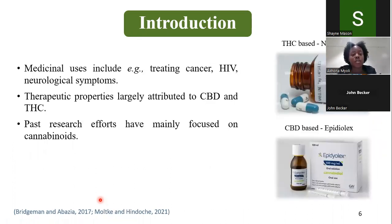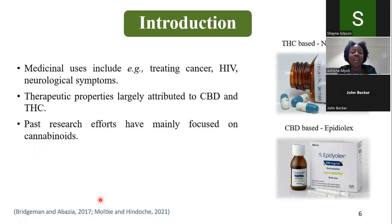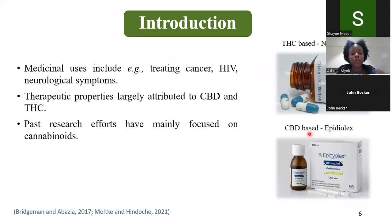With regards to its medicinal uses, cannabis is known to alleviate symptoms in individuals suffering from cancer or HIV, and to alleviate neurological symptoms such as sleeping disorders. All these observed therapeutic properties are largely attributed to a class of compounds called cannabinoids, and in particular compounds such as CBD and THC. Numerous medications have been developed from these compounds — examples being the THC-based dronabinol, used to treat pain, and the CBD-based Epidiolex, used to treat seizures.